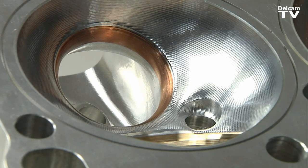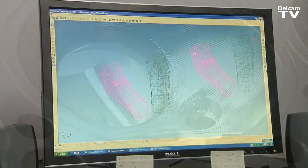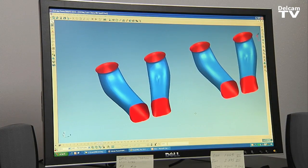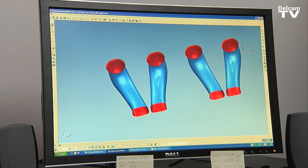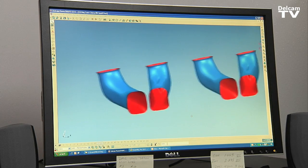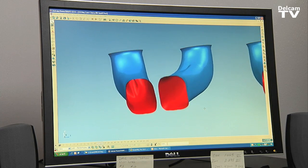We do a lot of manual work. Then we digitize the ports, the chambers, and whatever else we need to machine. We take that digitized data and import it into PowerShape.